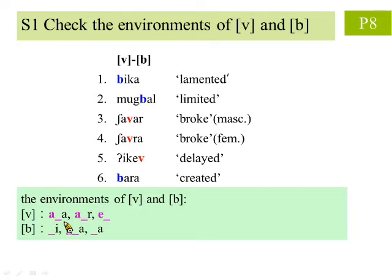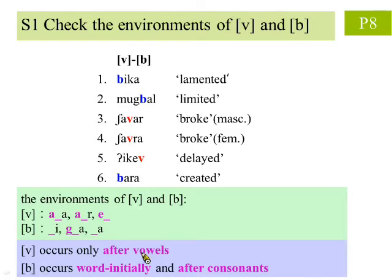We just summarize that they all show the feature of occurring only after vowels. And so we conclude, v occurs only after vowels, and b occurs word initially and after consonants. Therefore, the two sounds are in complementary distribution.